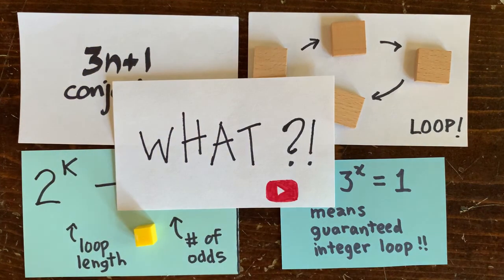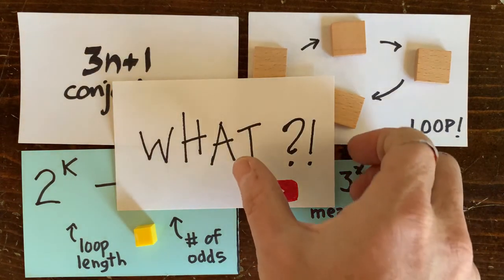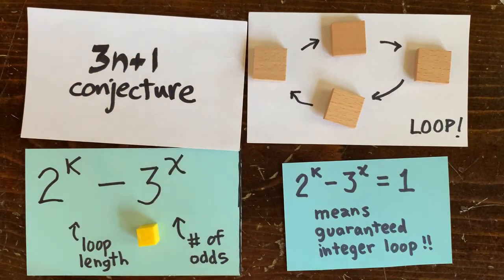Our friends will be like, that's nice. Okay, 2 to the k minus 3 to the x equals 1 definitely has a solution where k equals 2 and x equals 1 because 4 minus 3 equals 1.